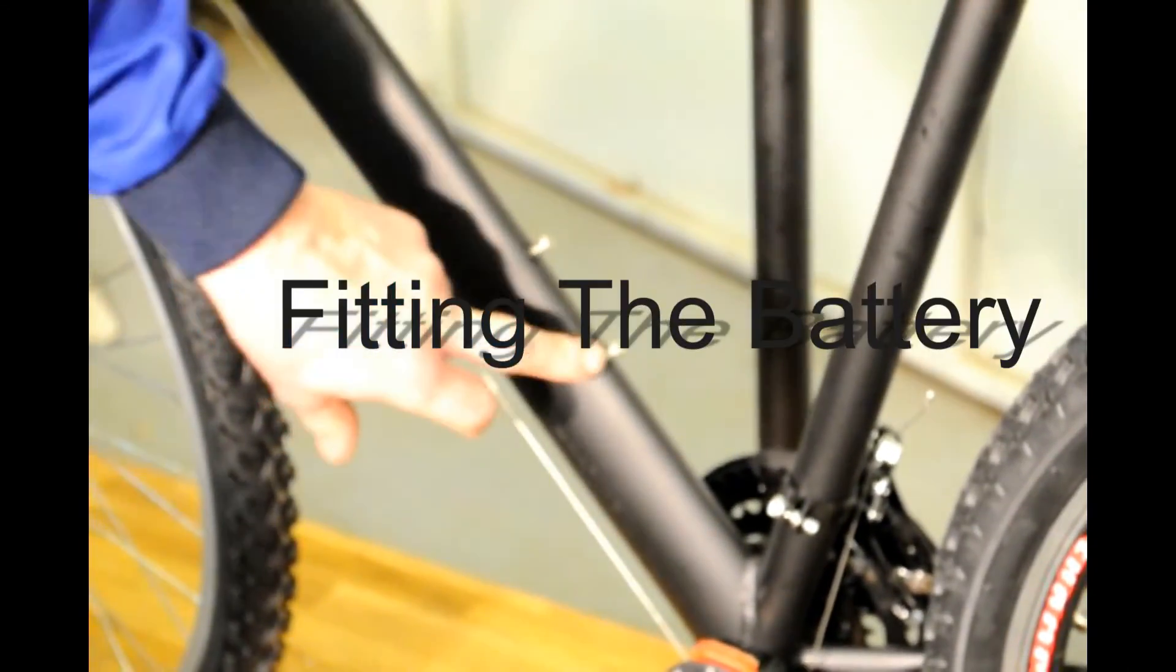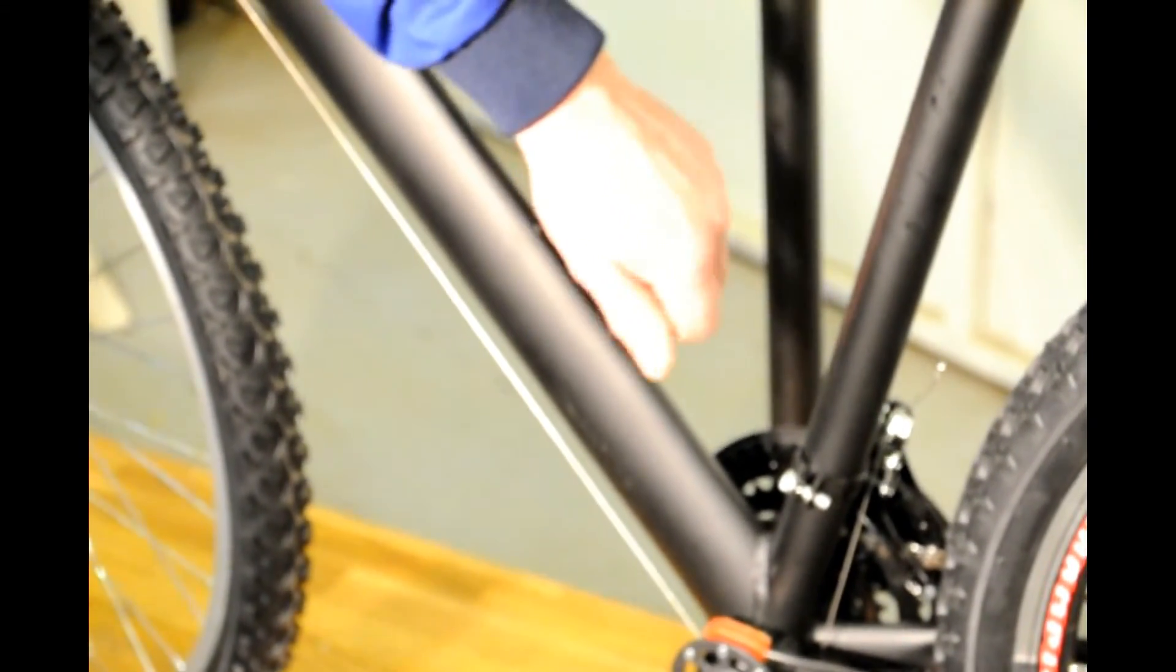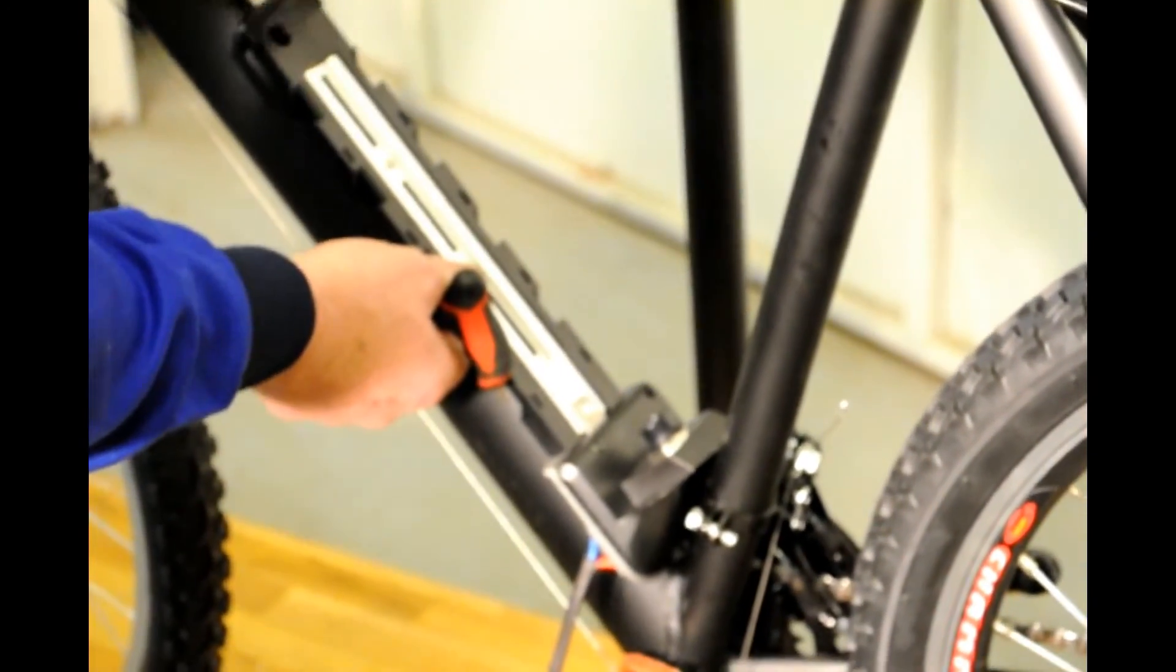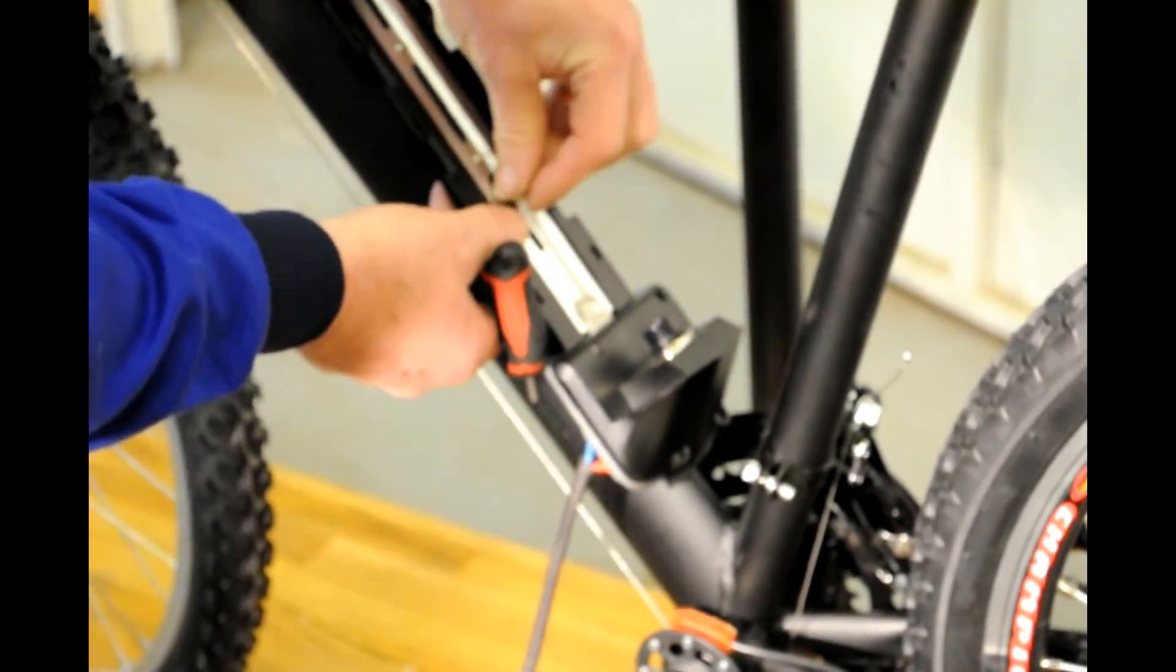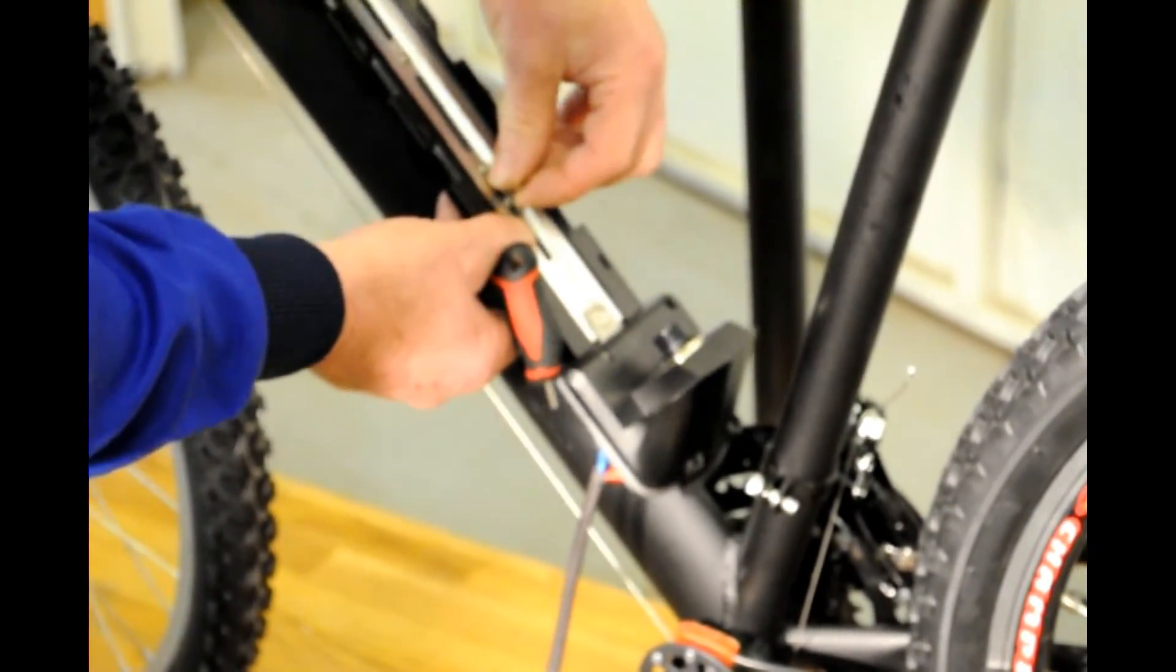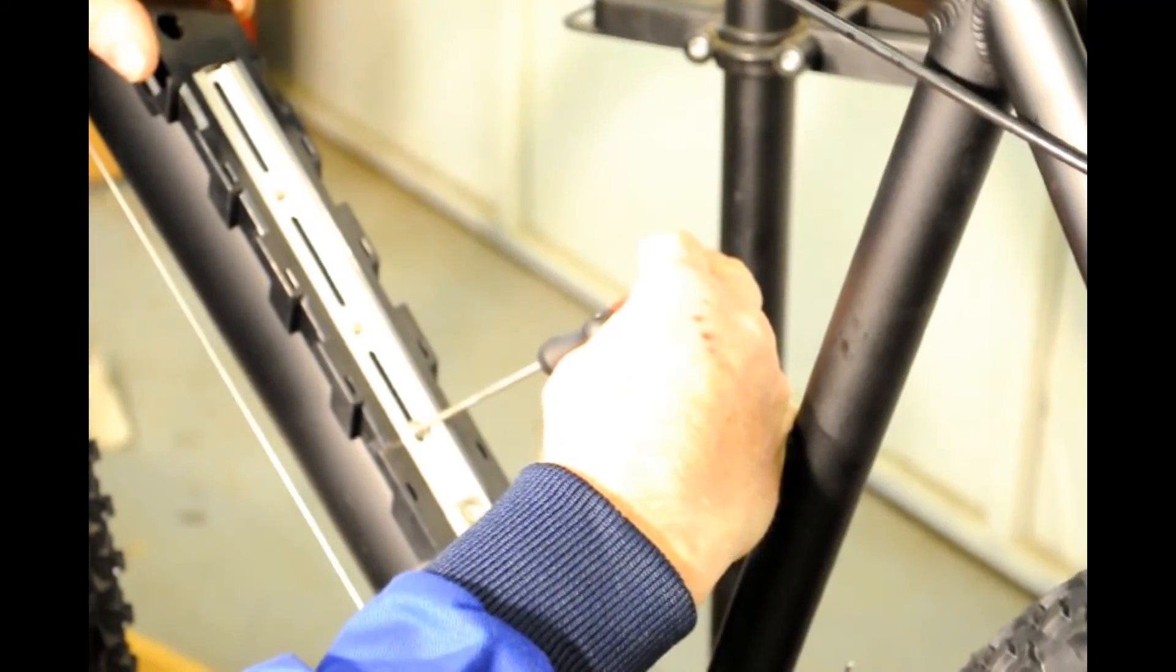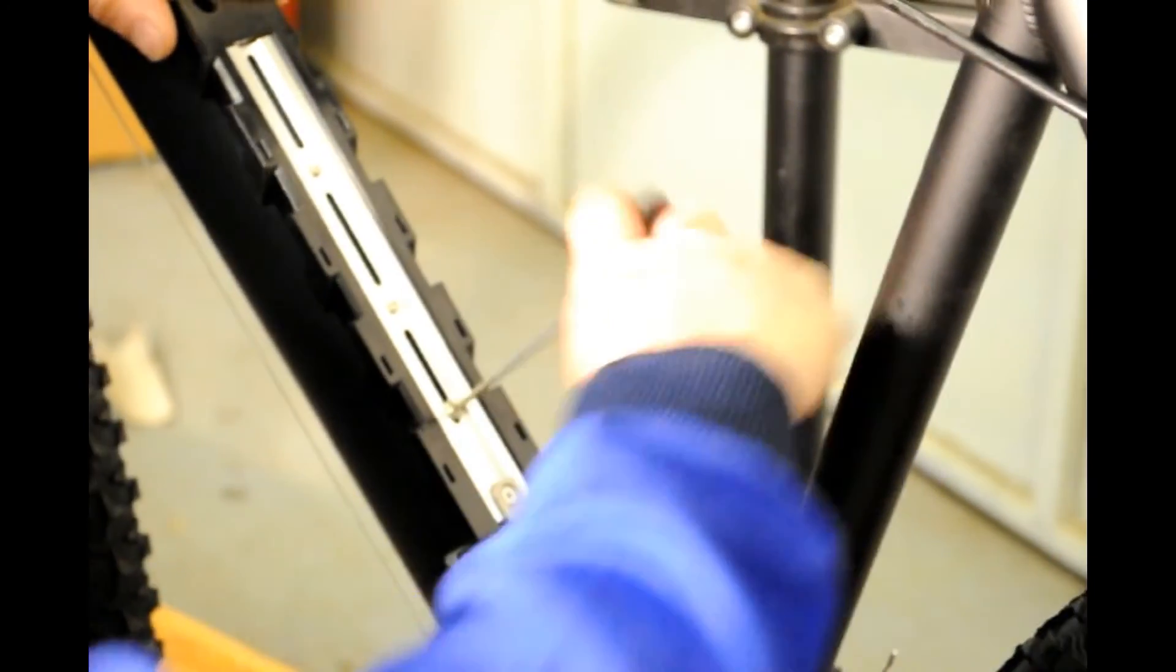We're going to mount the battery on the down tube where normally the bottle is mounted. Remove the two bolts if they're fitted. Offer up the plates to where the bolts would go. Secure the plate with the allen keys.